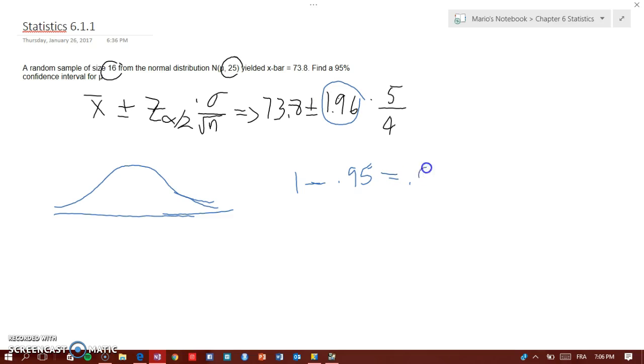And what you get is going to be 0.05. That 0.05 you are going to divide by 2.